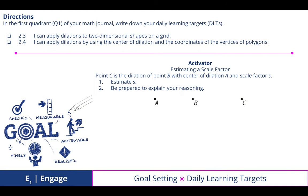In the first quadrant of your math journal, write down your daily learning target. Today I've included an activator on estimating a scale factor. Our two daily learning targets are: I can apply dilations to two-dimensional shapes on a grid, and I can apply dilations by using the center of dilation and the coordinates of the vertices of polygons.